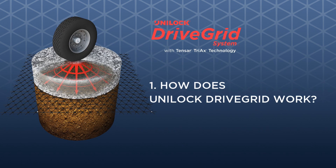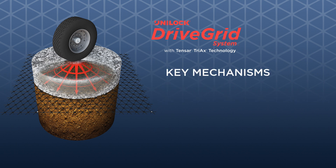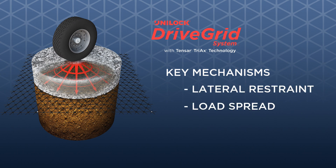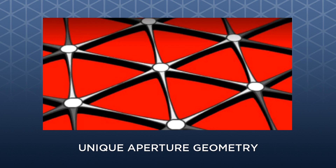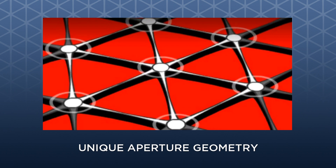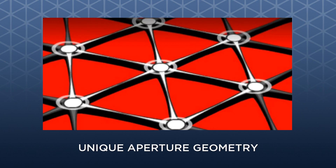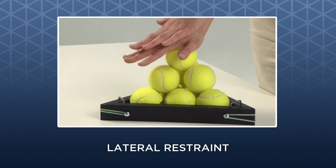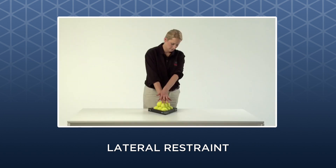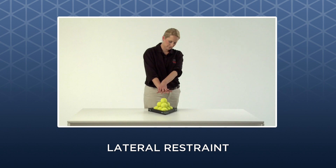Segment one: how does Unilock Drive Grid work to mechanically stabilize the base? The key mechanisms of Unilock Drive Grid are lateral restraint and load spread. The unique aperture geometry confines gravel particles in such a way that there is a stiffening of the granular layer. The lateral restraining mechanism is illustrated by stacked tennis balls.